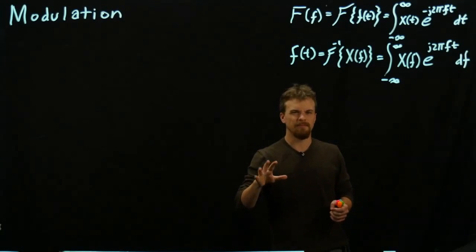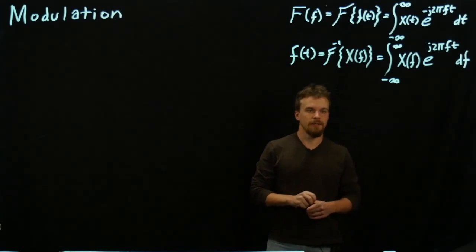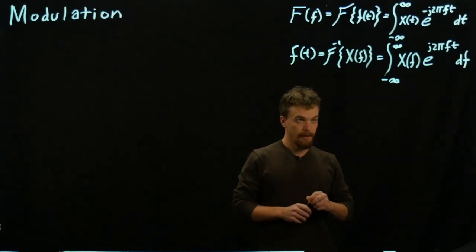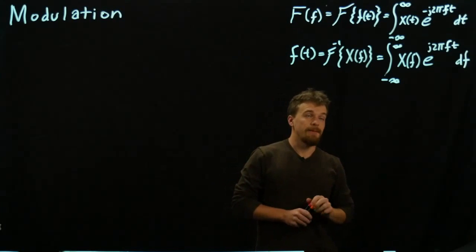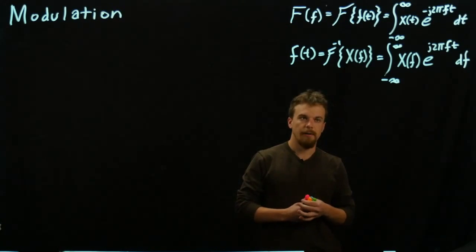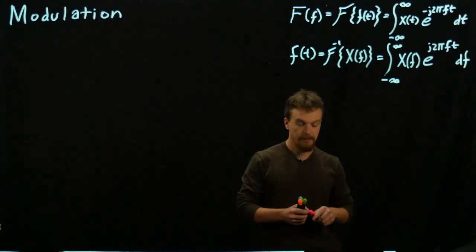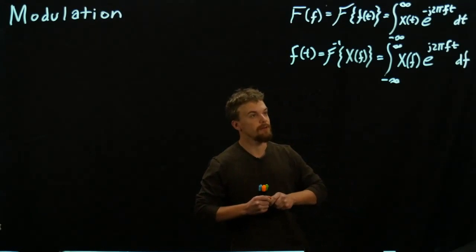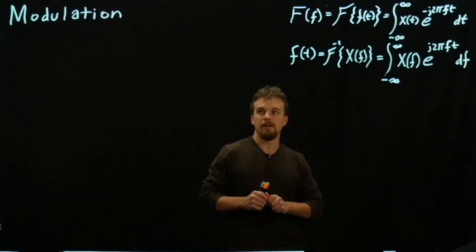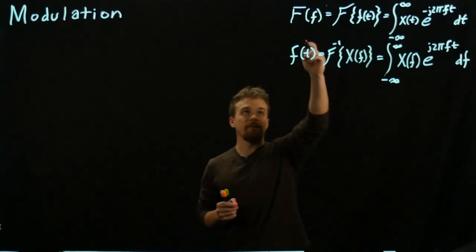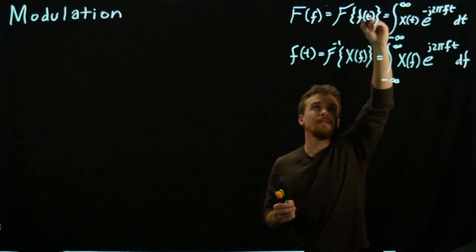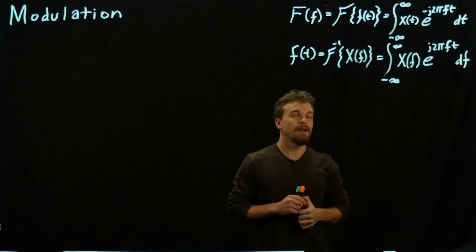We may discuss more about exactly what these definitions are saying at some point, but for now we'll just accept them. We'll write down some properties that you could also find in a textbook, and we may discuss them in depth in another video. This first property is for a single function — the Fourier transform of a single function of time.